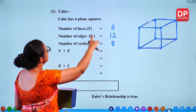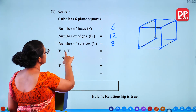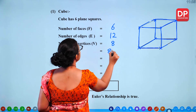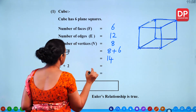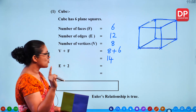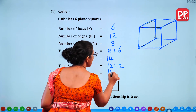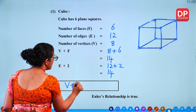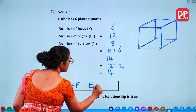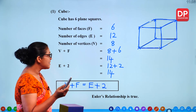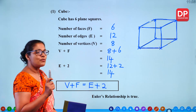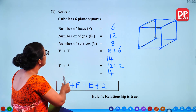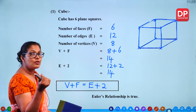Now we'll find out the relationship between faces, vertices and edges. Vertices plus faces — V plus F — gives us 8 plus 6 equals 14. Now take edges plus 2: 12 plus 2 also equals 14. So we can write: V plus F equals E plus 2. This is called Euler's relationship. Euler was a mathematician who found that vertices plus faces equals edges plus 2.